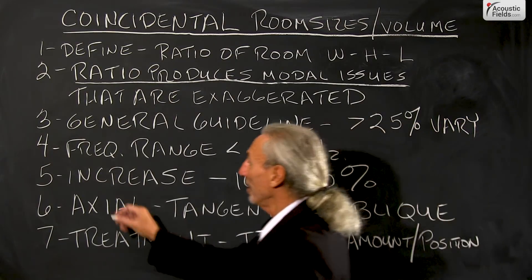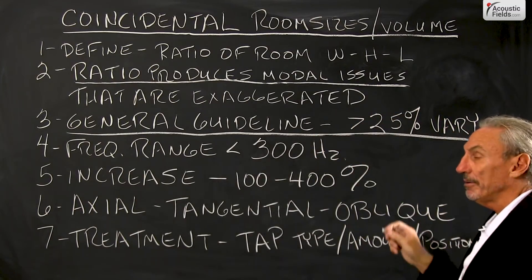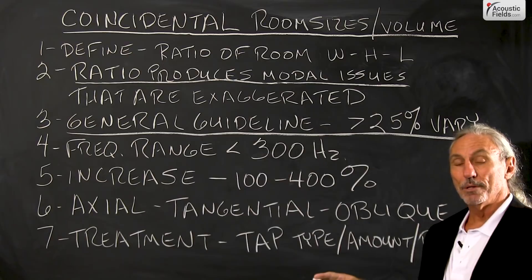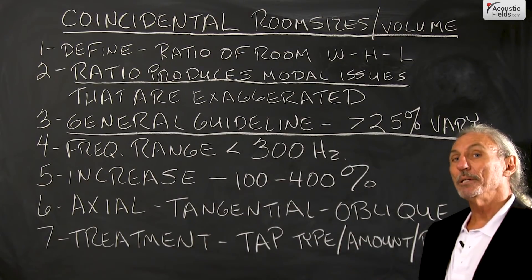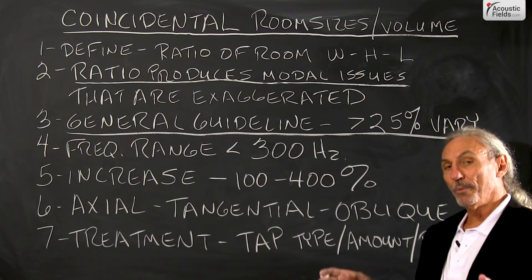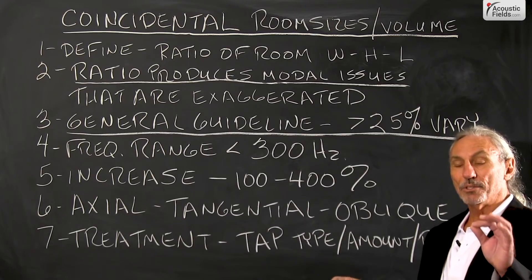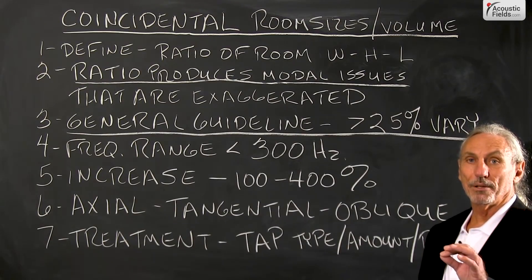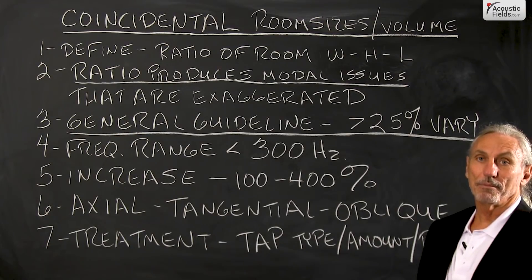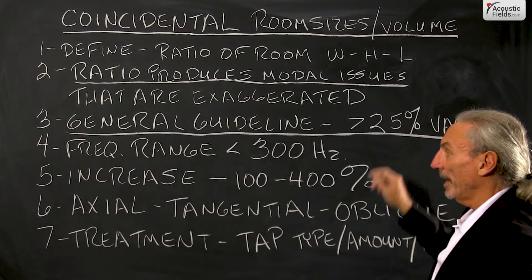So what's a good guideline to follow? Try to vary your dimensions — width, length, or height — by at least 25% starting out. We want to make sure that we have at least a 25% variance in each. The ceiling varies at least 25% from the width and the length. The width varies 25% from the height and the length, and so on. That's a good general guideline.